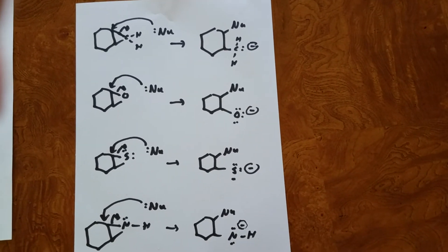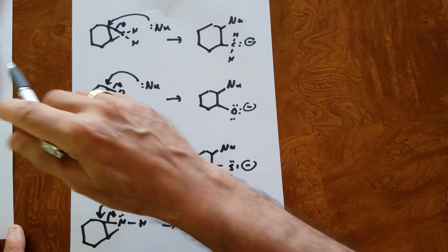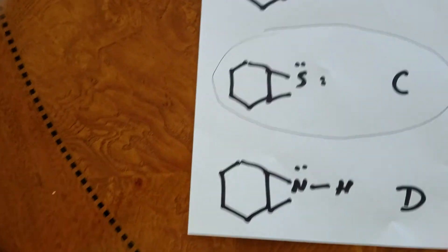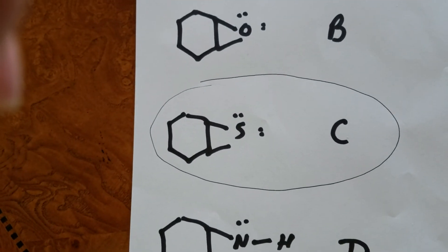Because it's more stabilized, the S minus would be the best leaving group. So the correct answer, if you go back to here, will be choice C, the one with the sulfur.